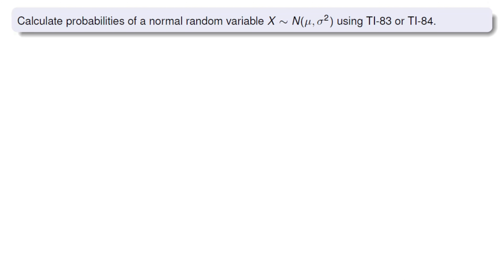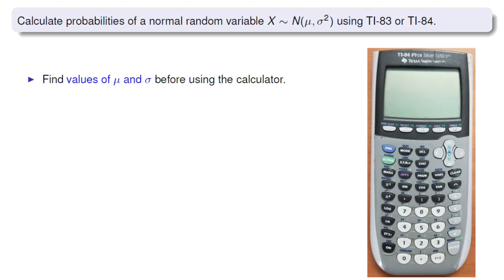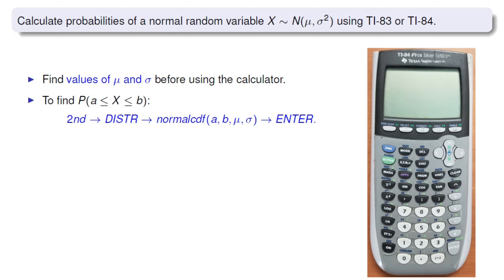Now let's introduce how to calculate probabilities regarding a normal distribution using the TI-83 or TI-84 calculator. Your first step is always to find the values of mu and sigma — the mean and standard deviation — before you use the calculator. Find the mean and standard deviation before using the calculator. This is your first step.